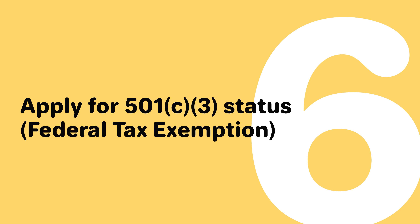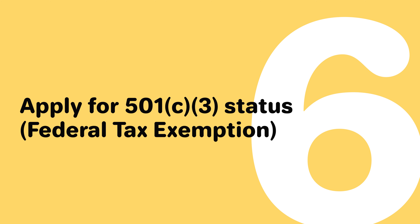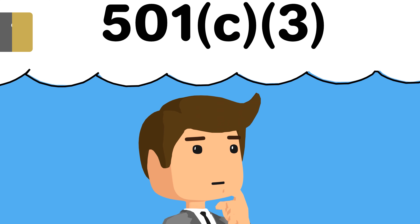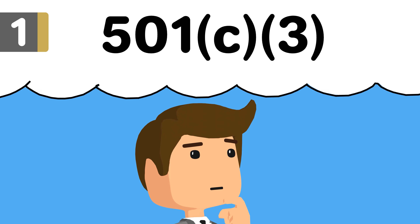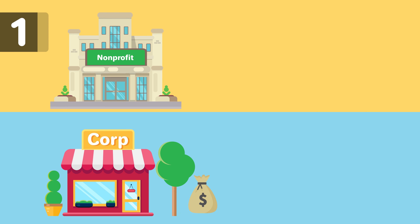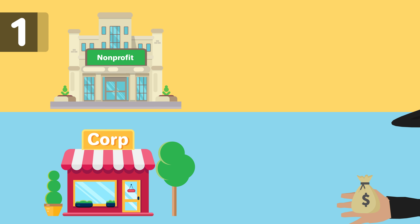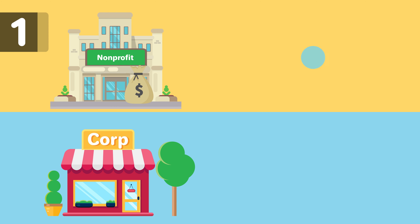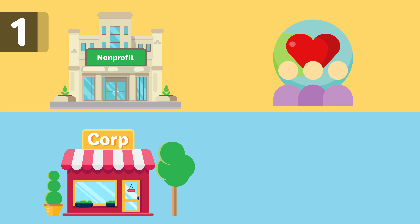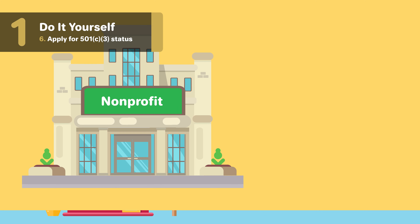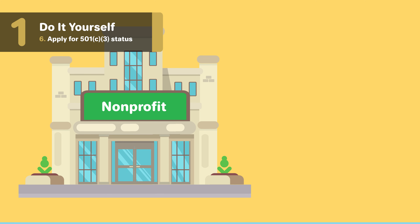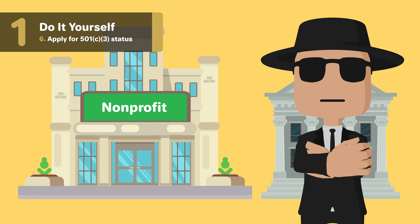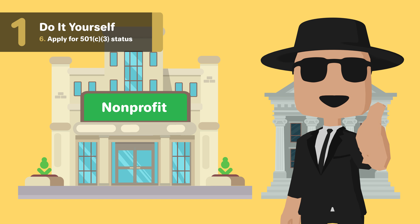Step six: apply for 501c3 status — federal tax exemption. When a corporation generates income, that corporation has to pay a federal income tax. As a nonprofit, your goal is to generate income that is used to help further a cause rather than fill the pockets of the company employees. Because of this, the federal government allows that nonprofits' income not be taxed so that more of the money can go towards the cause the nonprofit is supporting.